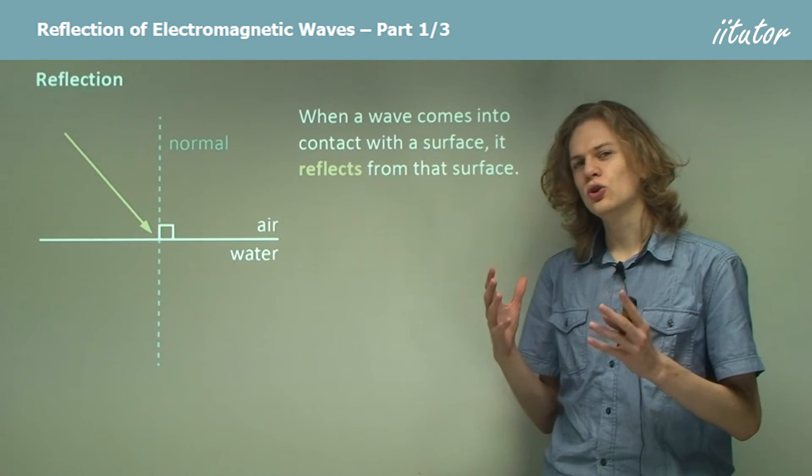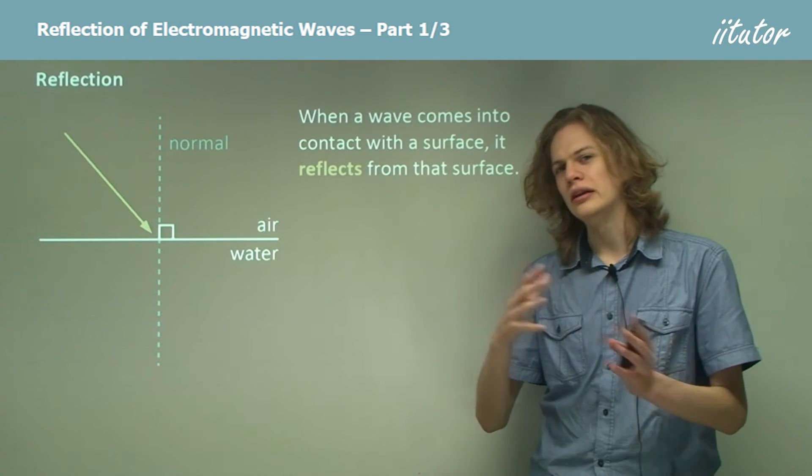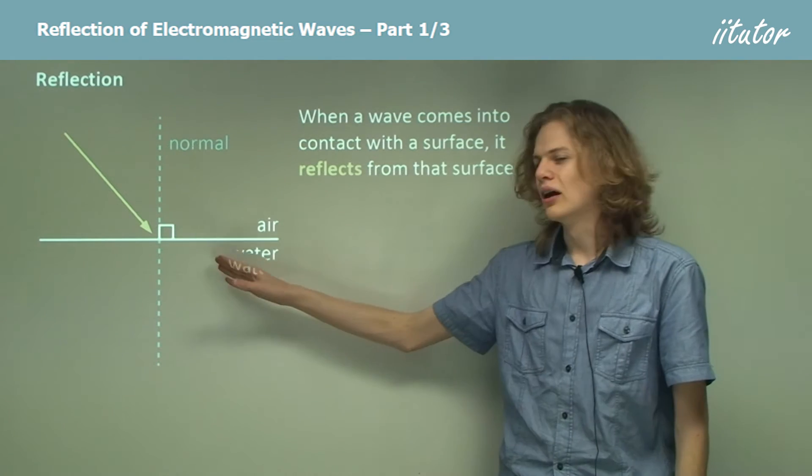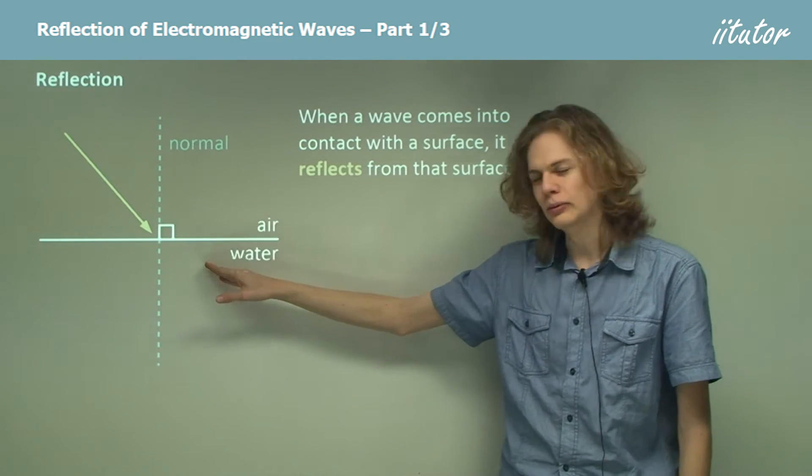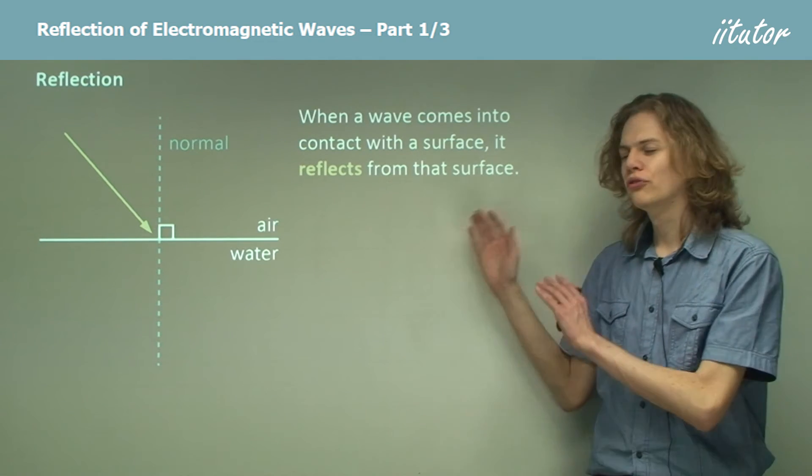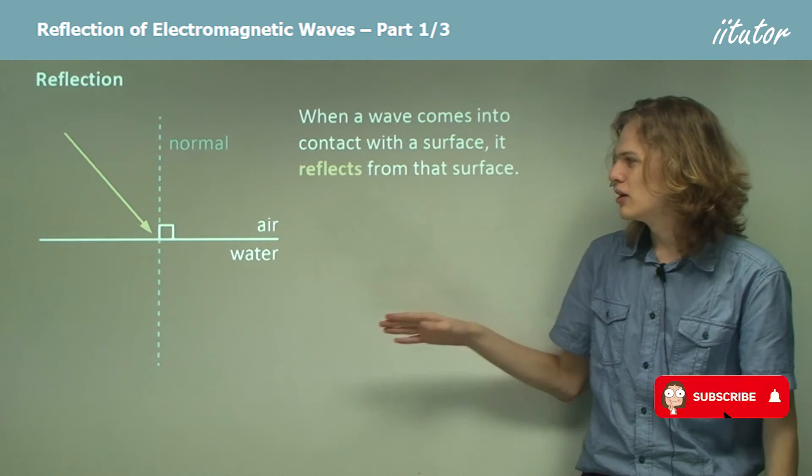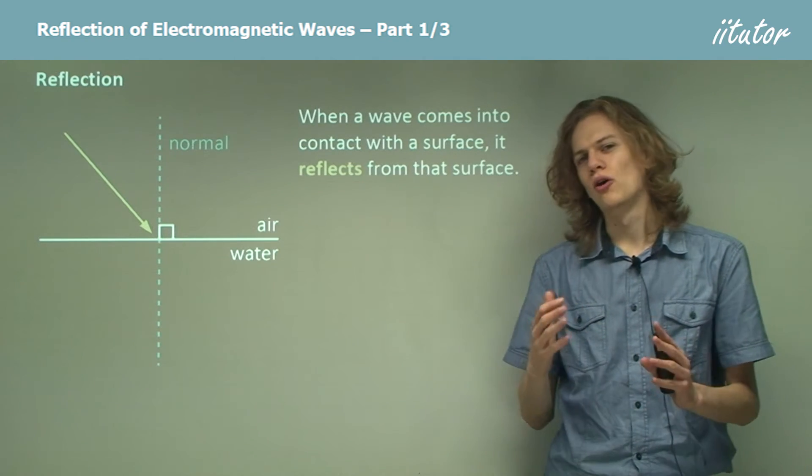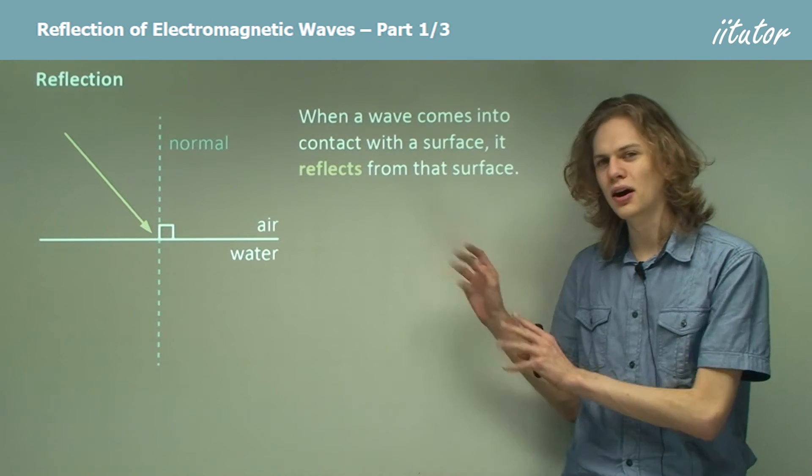When a wave comes into contact with the boundary between two media, like the boundary between air and water, then it will reflect from that surface. Some of it might in fact pass through the boundary, but at the moment we're only worried about the reflecting part.